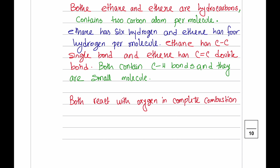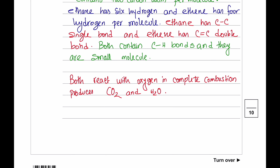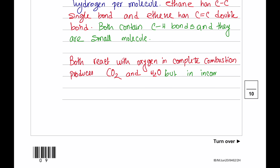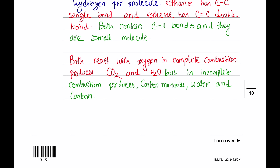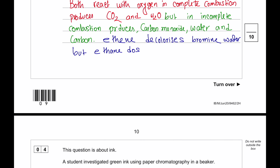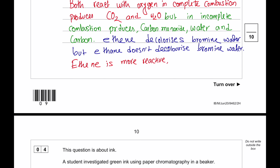Incomplete combustion is more likely with ethene. Ethene decolorizes bromine water, whereas ethane does not, because ethene has a C=C double bond which makes it more reactive. Ethene can react with hydrogen to produce ethane, with steam or water to produce ethanol, and with halogens to produce halogenoalkanes. Ethene can undergo addition reactions and can polymerize to produce poly(ethene).